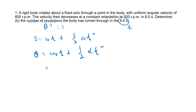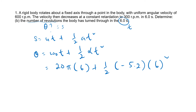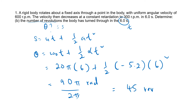Substituting values: theta equals 20π times 6 plus half times (−5.2) times 6 squared. This gives theta equals 19π radians. But the question asks for the number of revolutions, not radians, so we divide by 2π. The pi cancels, giving a final answer of 45 revolutions.